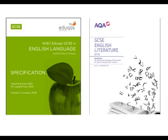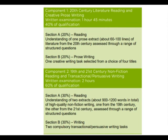In Year 10 and 11, you will all follow the GCSE Eduqas English Language specification and the AQA English Literature specification. Both qualifications are entirely based on two examinations which you will take at the end of Year 11. In English language, your two exams are named Component 1 and Component 2. Component 1 is a written exam lasting 1 hour and 45 minutes, centred on 20th century unseen literature and creative prose writing. Component 2 is a two-hour examination focusing on 19th and 21st century unseen non-fiction texts and transactional writing.